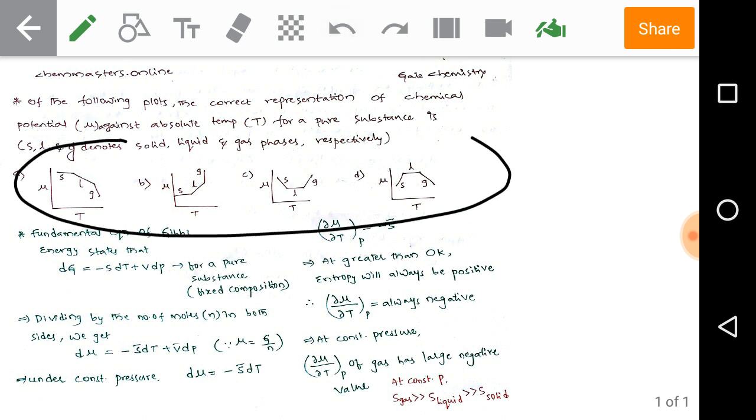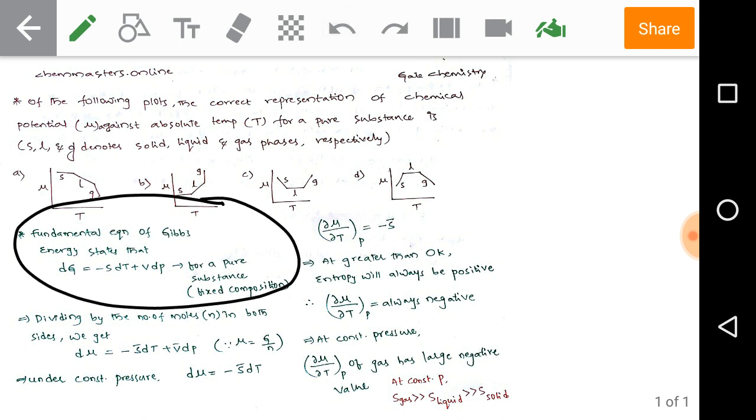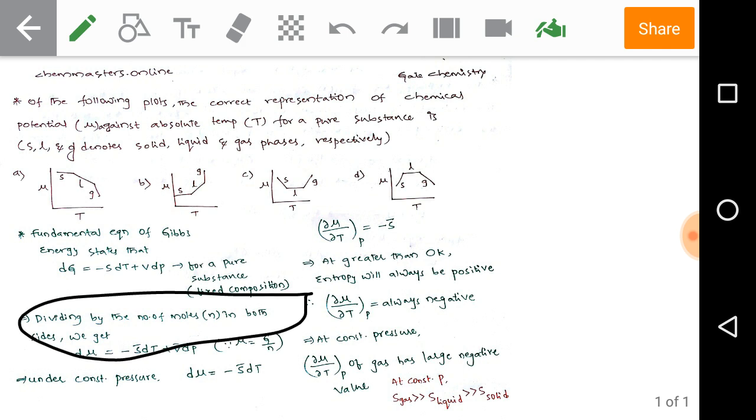Now we have the fundamental equation of Gibbs energy states that dG is equal to minus SdT plus VdP. This equation is a fundamental equation for a pure substance, that means simply with fixed composition of a substance. And dividing by the number of moles in both sides we get dmu equals to minus s bar dT plus V bar dP.